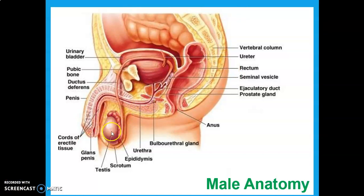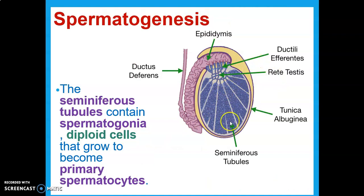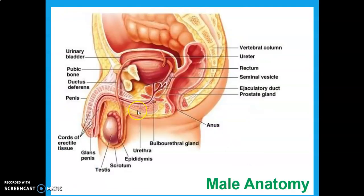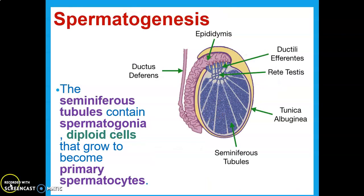If you zoom into the testes, they're filled with seminiferous tubules. Looking into one of these seminiferous tubules is where the sperm are actually being made. They travel up into the epididymis and go through the vas deferens — or ductus deferens. This vas deferens is actually what would be cut if someone were to get a vasectomy: they would cut this to stop the flow of sperm into the ejaculatory tract. That's a surgical sterilization, but it can be reversed.